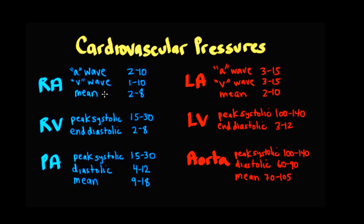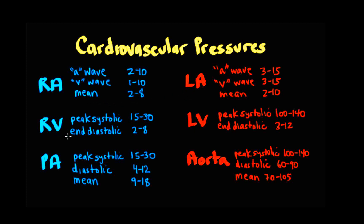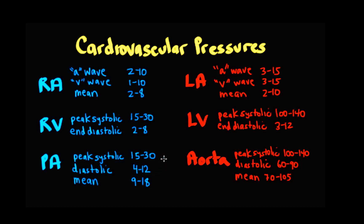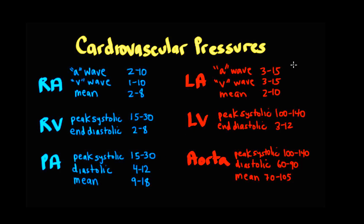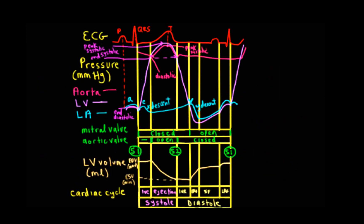For the atria, we have important waveforms: the A wave, the V wave, and we can also calculate the mean pressure. For the ventricles, there's the peak systolic pressure and the end diastolic pressure. For the great arteries, we have the peak systolic and diastolic pressures, as well as the average pressure. We can also look at the difference between the peak systolic and the minimum diastolic pressure, which is called the pulse pressure.